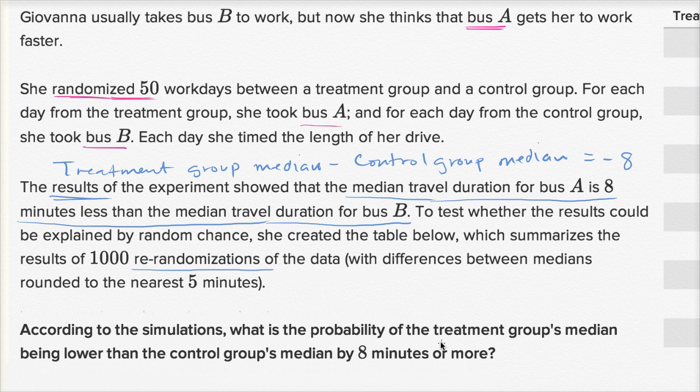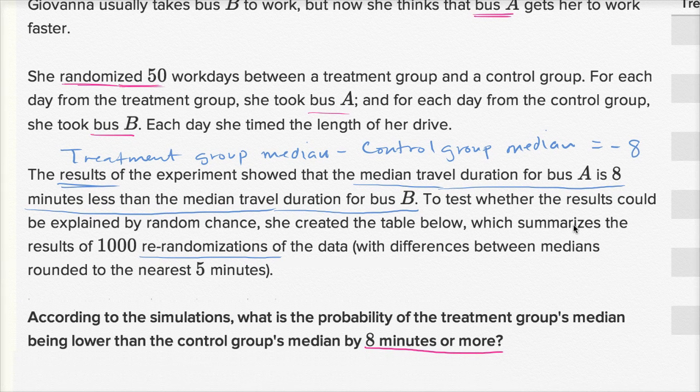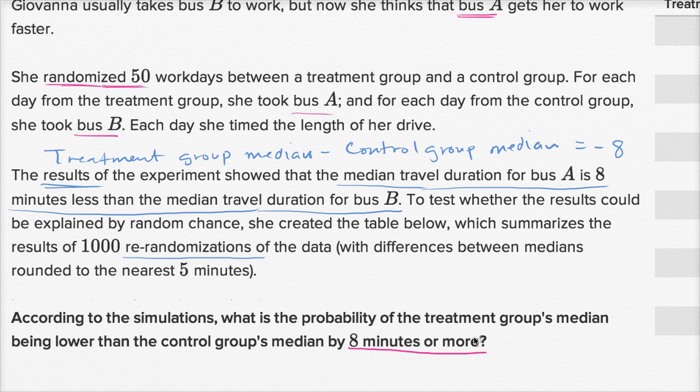According to the simulations, what is the probability of the treatment group's median being lower than the control group's median by eight minutes or more? Which, once again, eight minutes or more, that would be negative eight and negative 10, and we just figured that out. That was 93 out of the 1,000 re-randomizations, so it's a 9.3% chance. And if you set 5% as your cutoff for statistical significance, you'd say, okay, this doesn't quite meet my cutoff, so maybe this is not a statistically significant result.